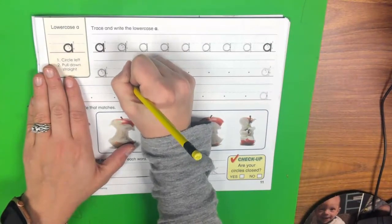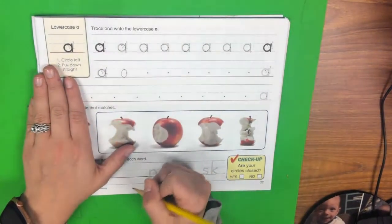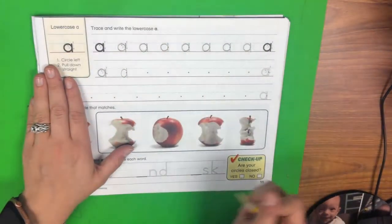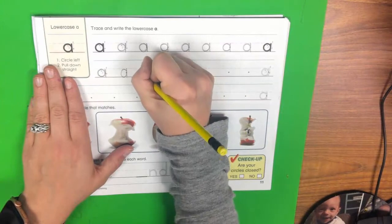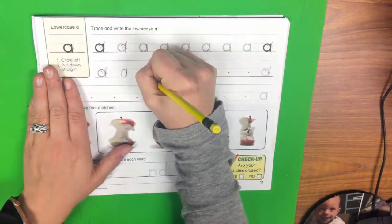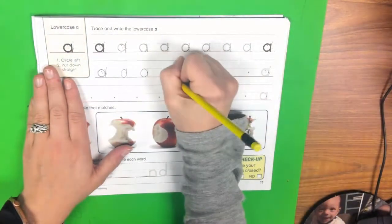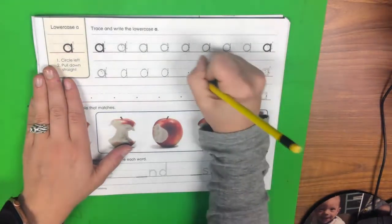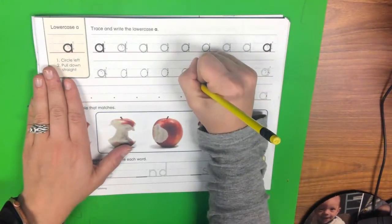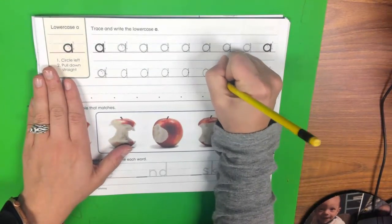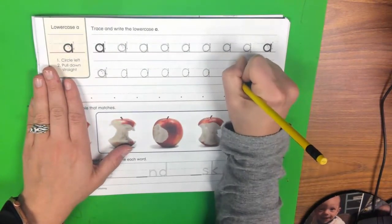So we're going to circle left, make sure it's a nice circle. Go up to the dotted line, pull down straight. Circle left, make sure it's a nice circle. Go to the dotted line, pull down straight. Circle left, go to the dotted line, pull down straight. And you're going to keep doing that until you fill up both lines.